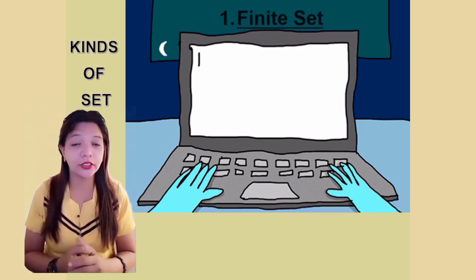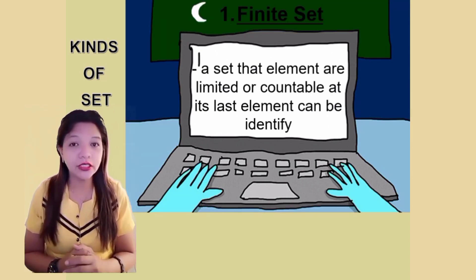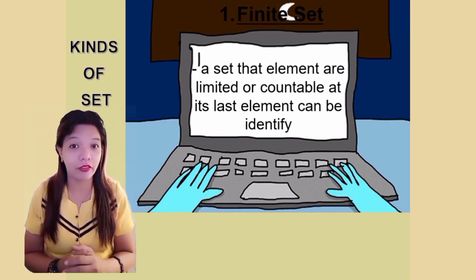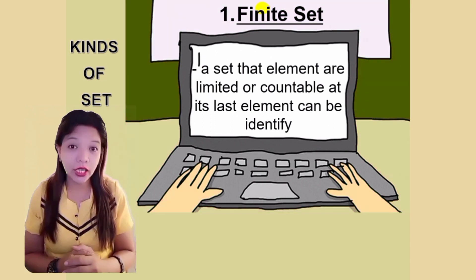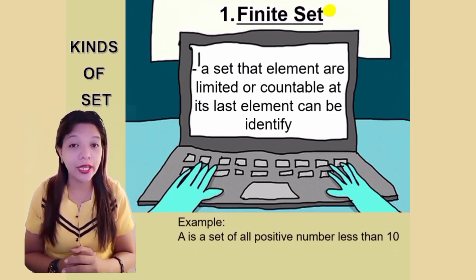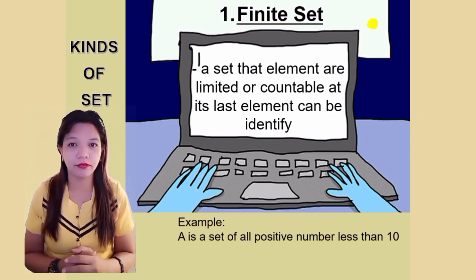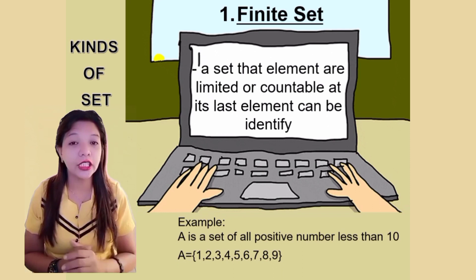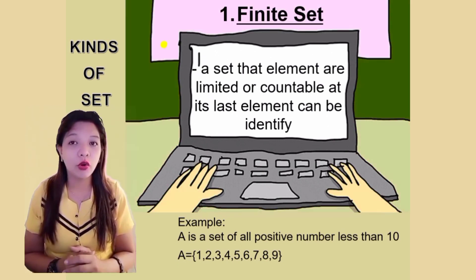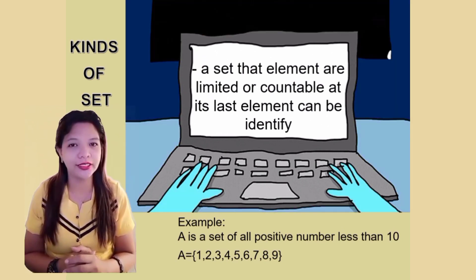The first one is finite set, a set that elements are limited or countable and its last element can be identified. Let's have our example. A is a set of all positive numbers less than 10. What is its element? A is equals to open brace 1, 2, 3, 4, 5, 6, 7, 8, 9, close brace.